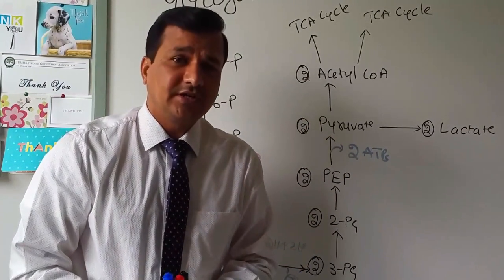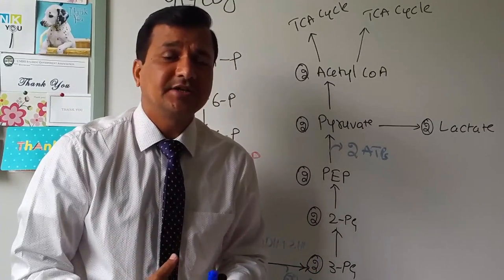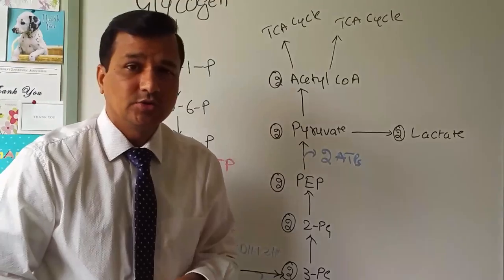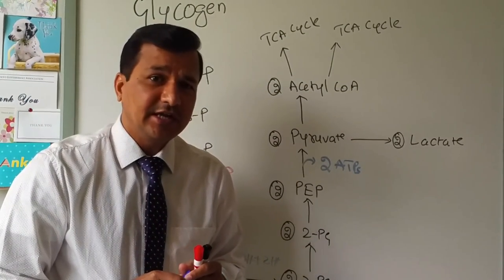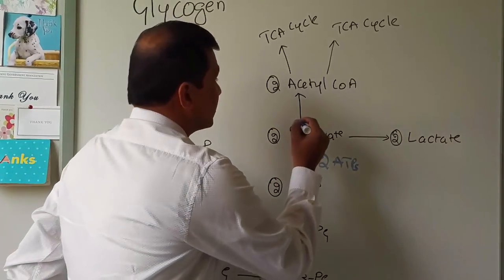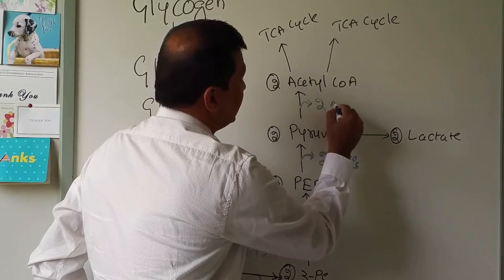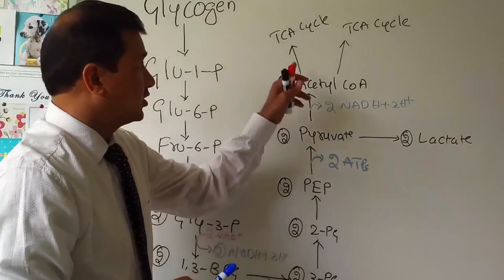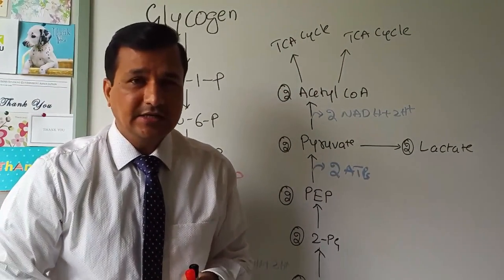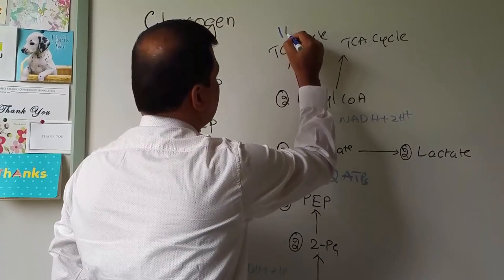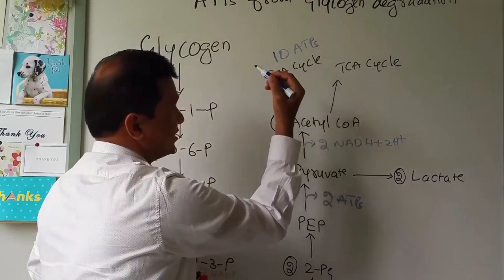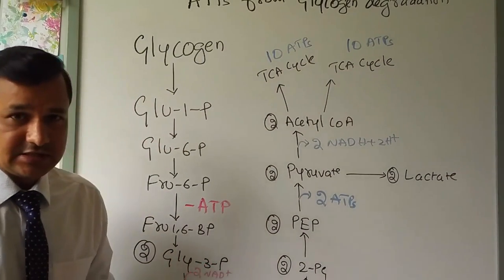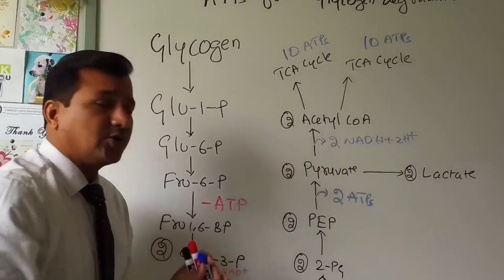Now, if the muscle has sufficient oxygen — as during initial muscle activity — the 2 pyruvate molecules enter the mitochondrial matrix and are converted into 2 acetyl-CoA molecules by the pyruvate dehydrogenase enzyme complex, generating 2 more NADH + H⁺. These 2 acetyl-CoA molecules then undergo 2 individual TCA cycles, yielding 10 ATPs per acetyl-CoA, so 20 ATPs total from the TCA cycles.